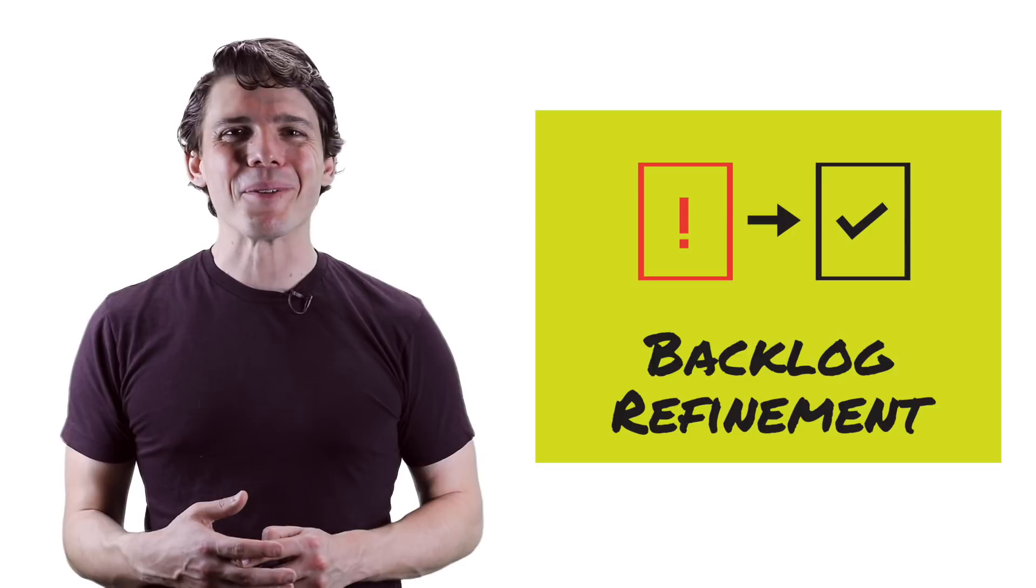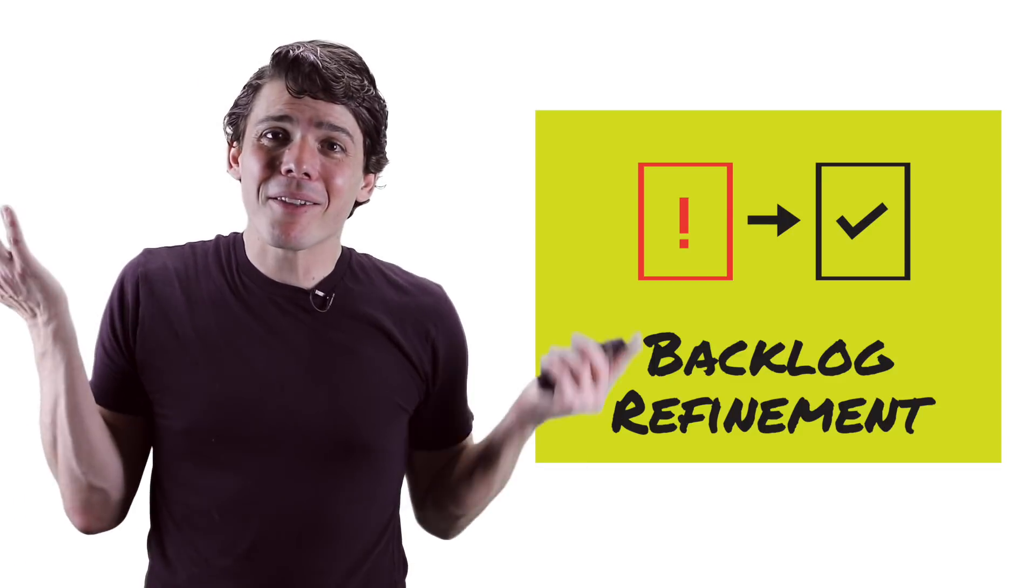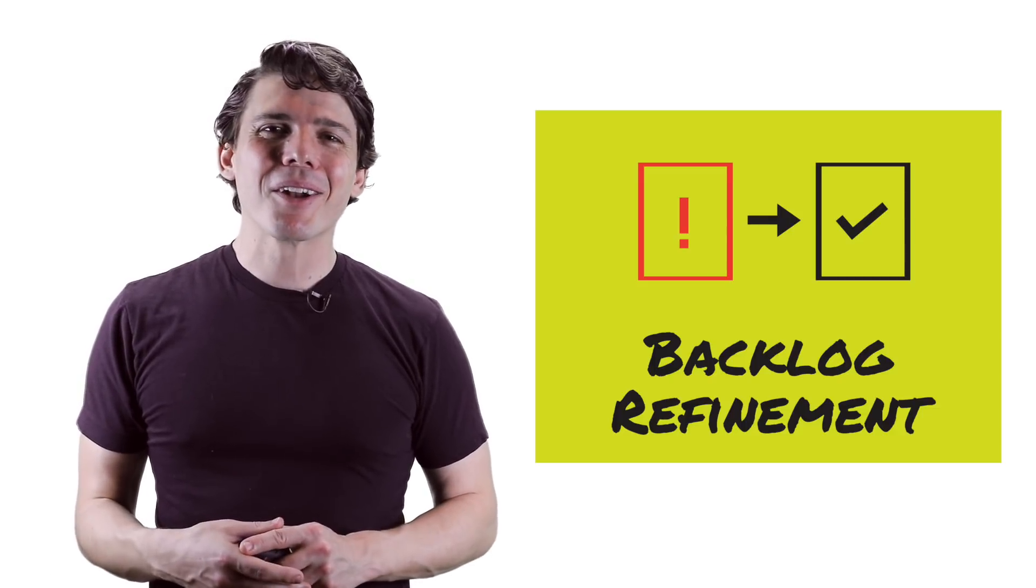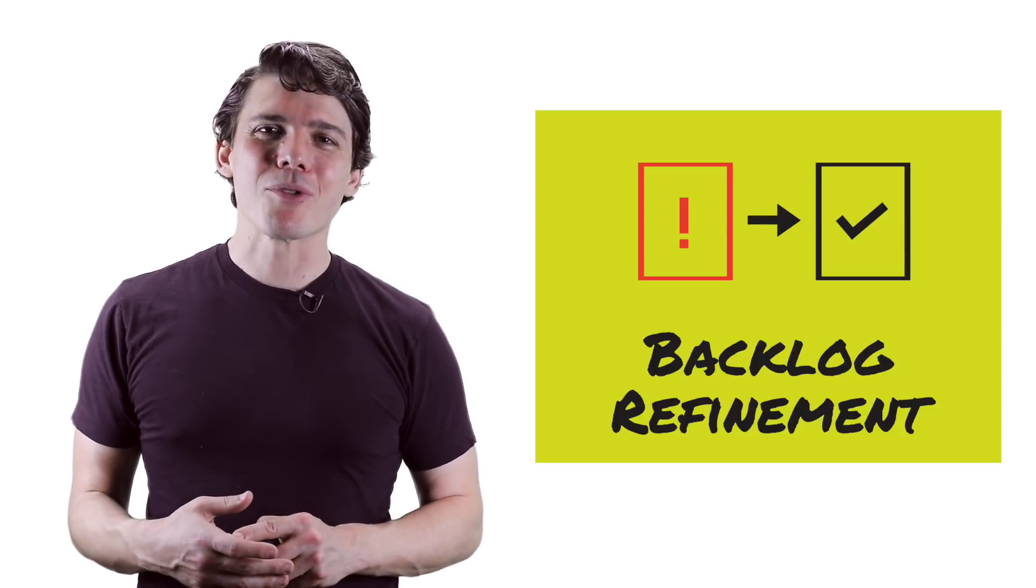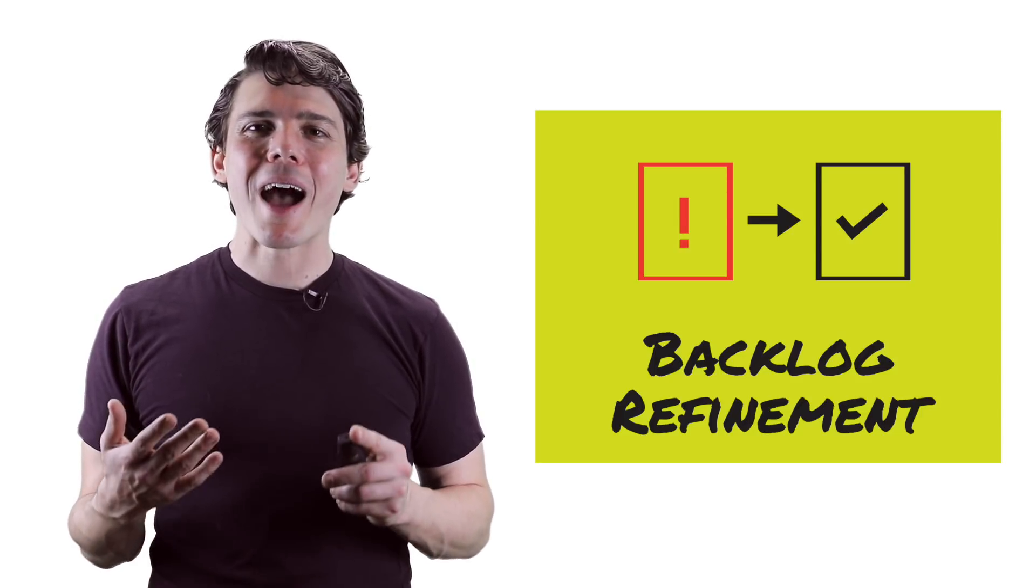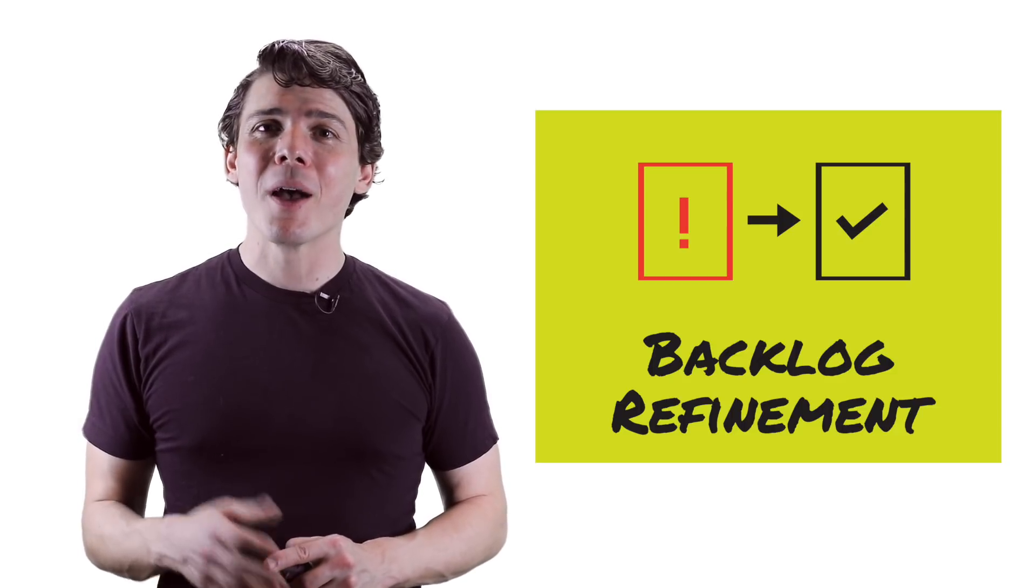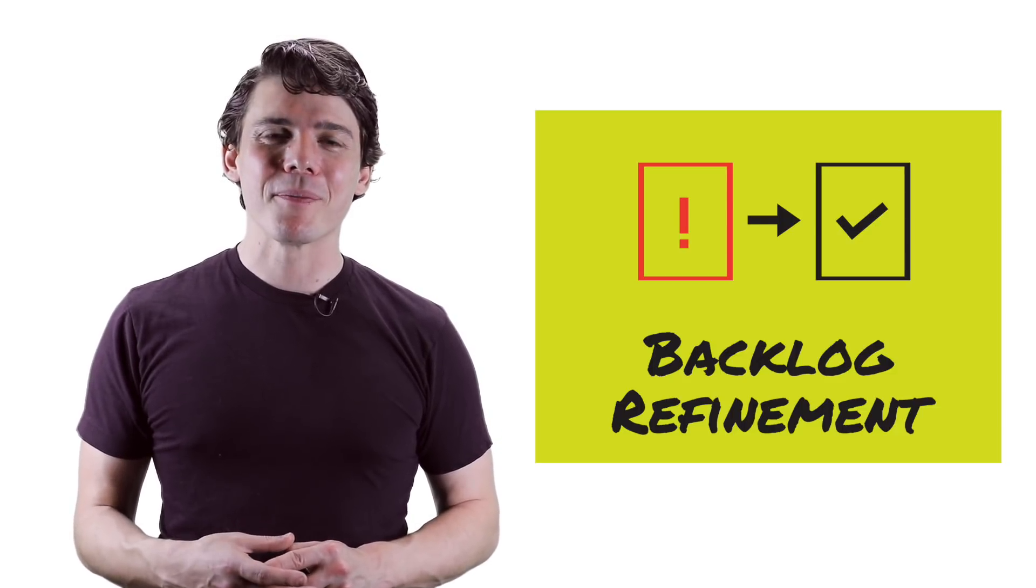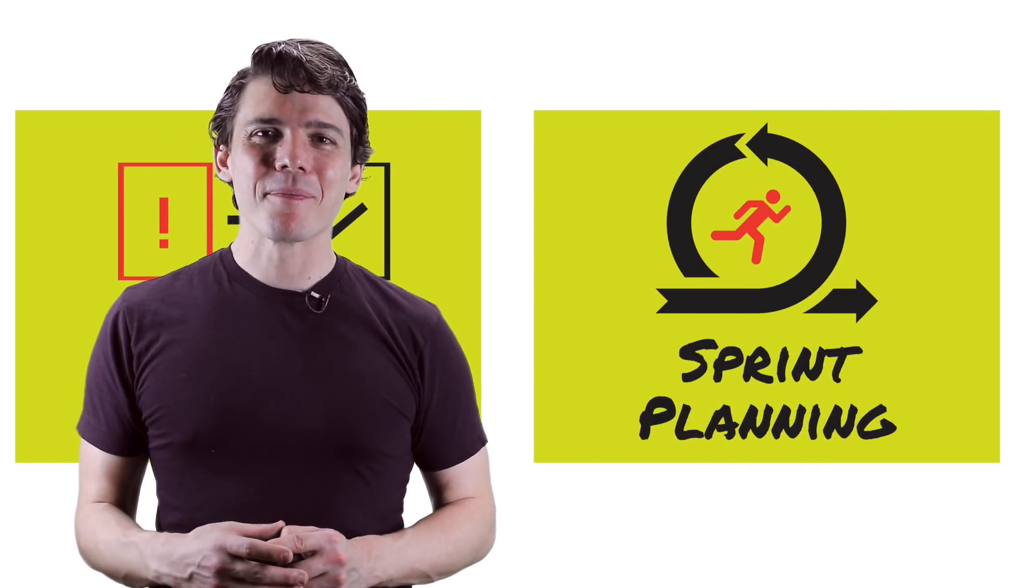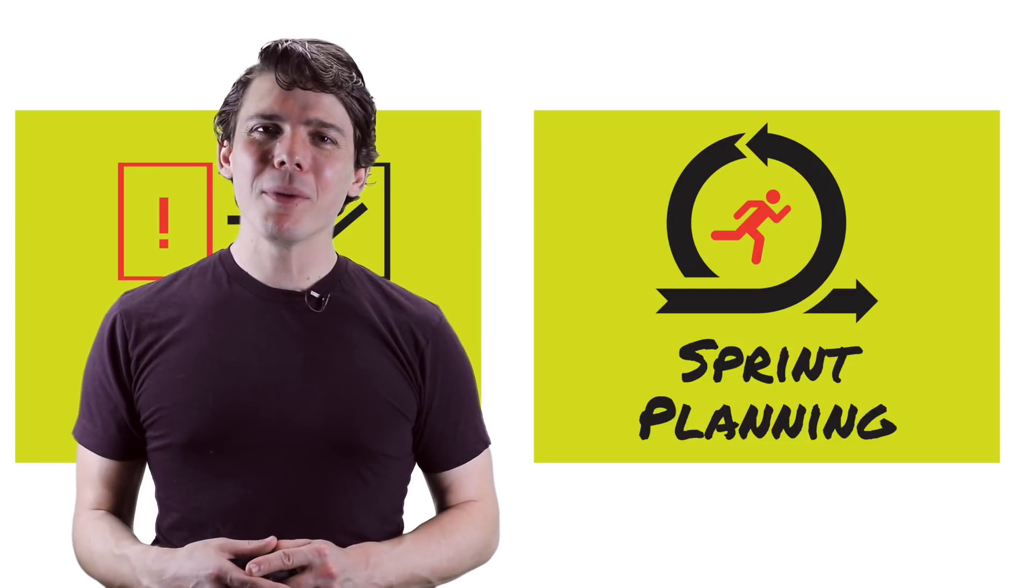For instance, suppose the product owner says that they would like a cup of hot coffee. A member of the development team might ask, how hot is hot? After a brief conversation, they'll decide on a more objective measurement of temperature and update the user story. Our goal will be to have one and a half to two sprints worth of ready stories by the time we start our next sprint.